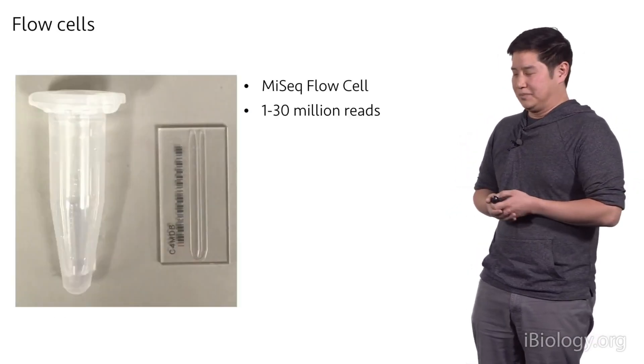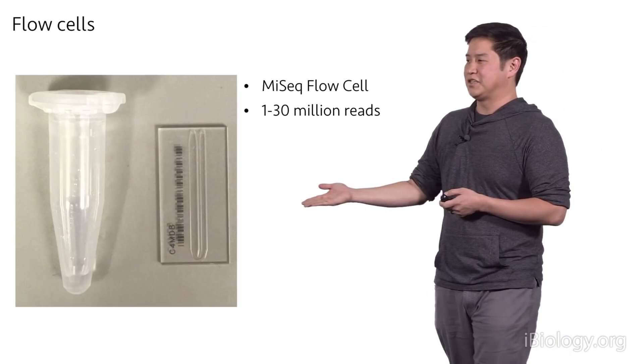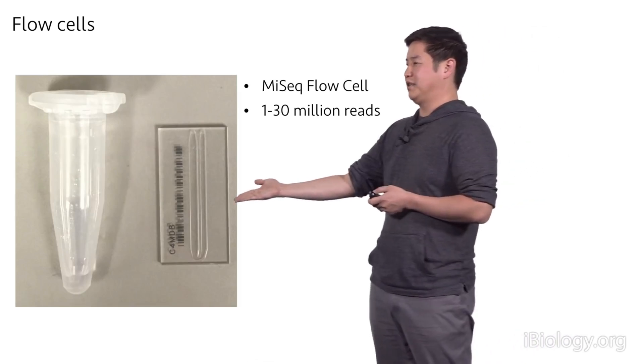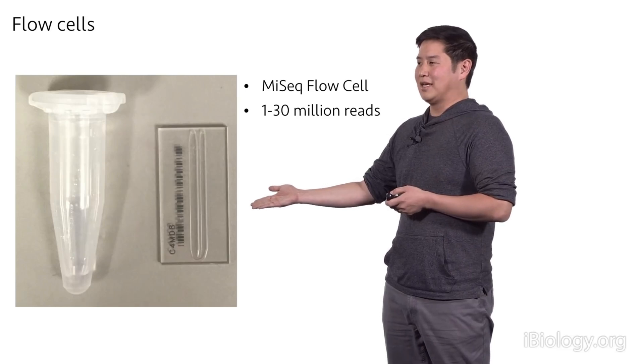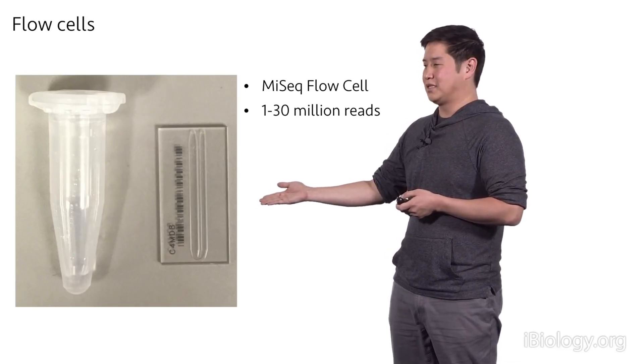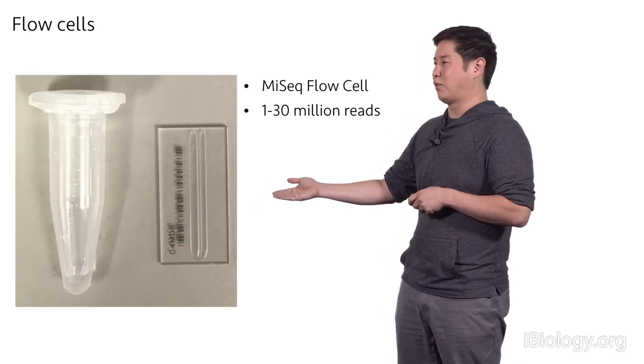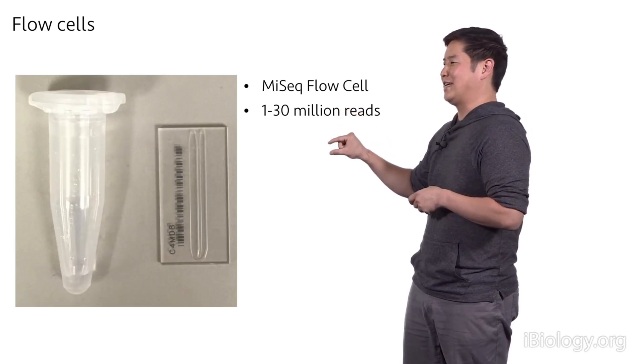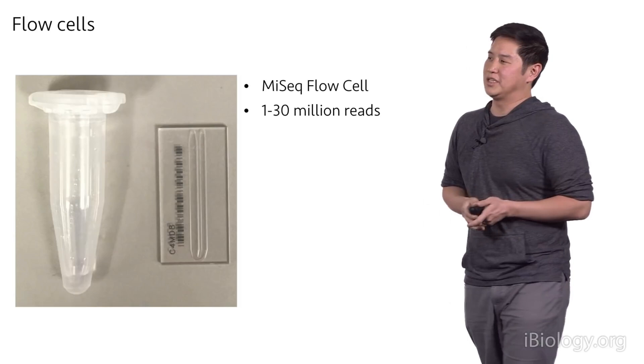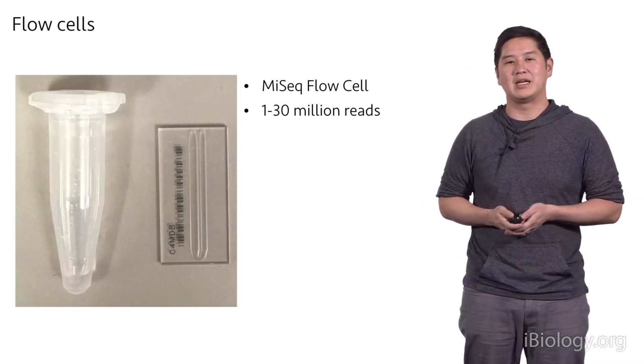And the sequencing on these Illumina platforms happens in flow cells. These are essentially microscope slides with channels on the inside. What I have shown here is a MySeq flow cell next to a standard Eppendorf tube that's used for a lot of lab work. And these tubes are pretty small, about one and a half inches in height. And on this MySeq flow cell, we can generate about one to 30 million reads per run.